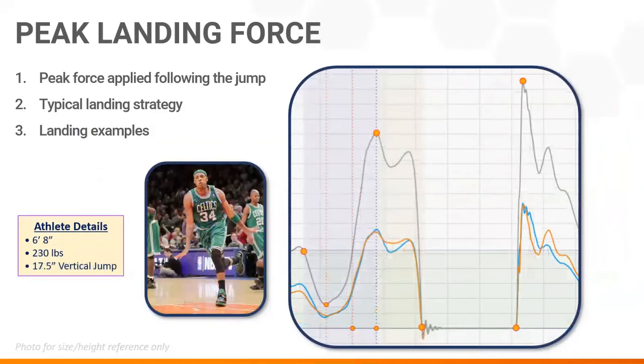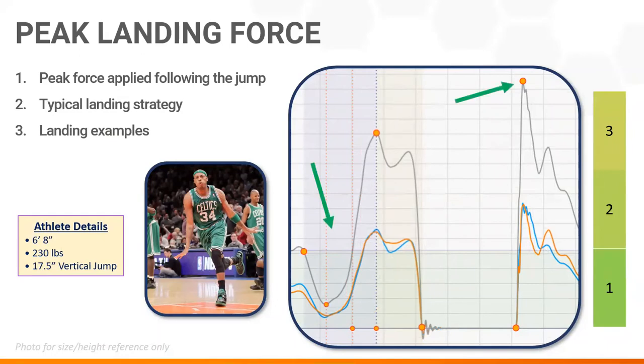However, this athlete is taller and heavier with nearly the same vertical jump height. Notice how his eccentric phase is exceptionally potent, plus his peak landing force is only about 3 times body weight. This suggests he can load effectively and land softly with control, thus reducing injury risk.